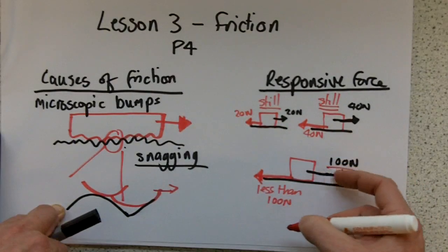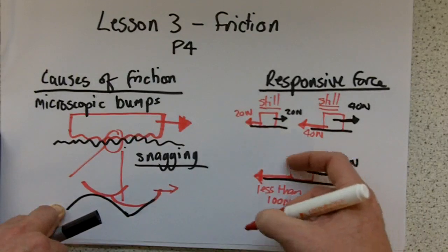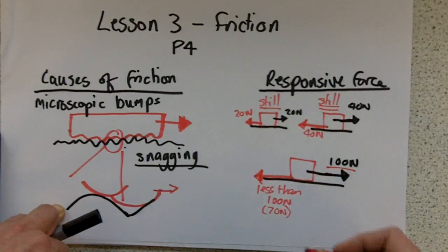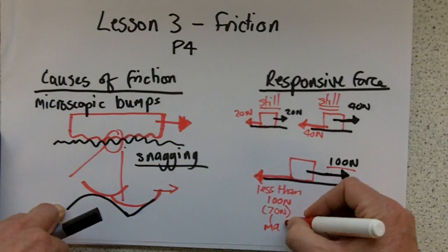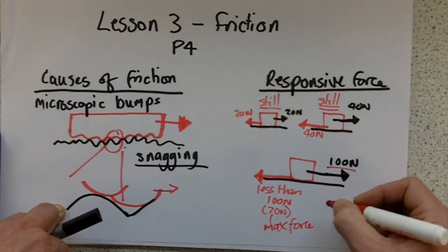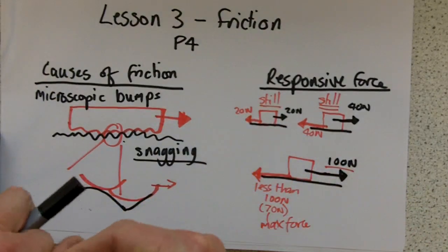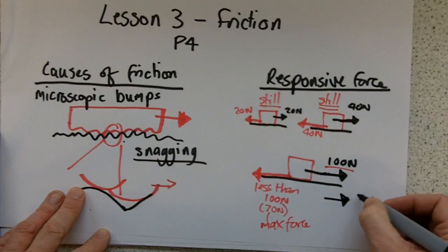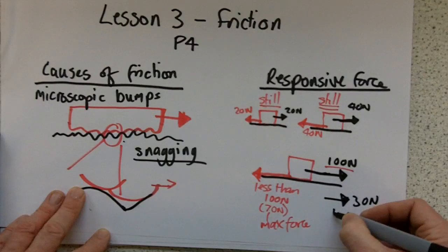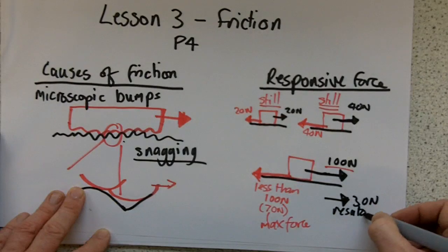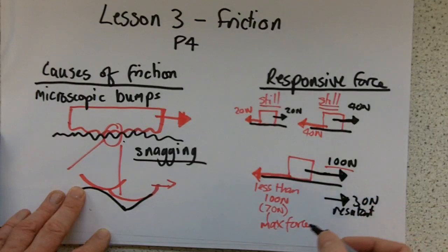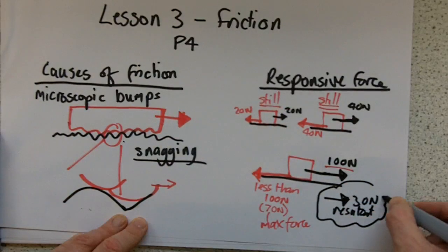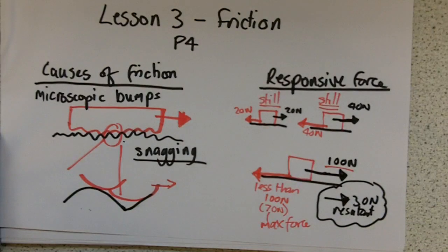Now in this situation, I've got 100 Newtons here, and less than 100 Newtons here. Let's say for example, it's 70 Newtons, my maximum friction force. Then I'll have a resultant force, i.e. the forward force will be bigger, by 30 Newtons. And because of that, the object will start to accelerate in this direction, because I've got an unbalanced force. But we'll come on to balance and unbalanced forces in a bit.